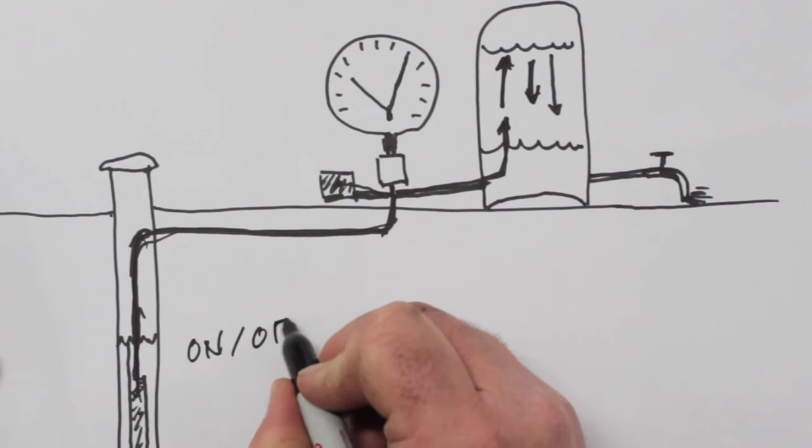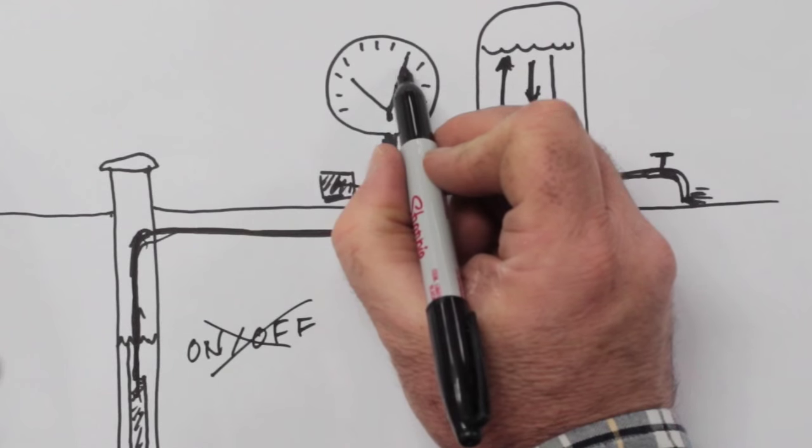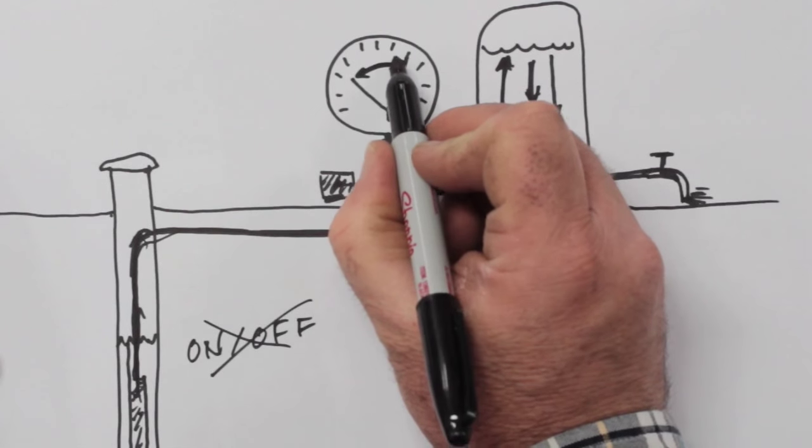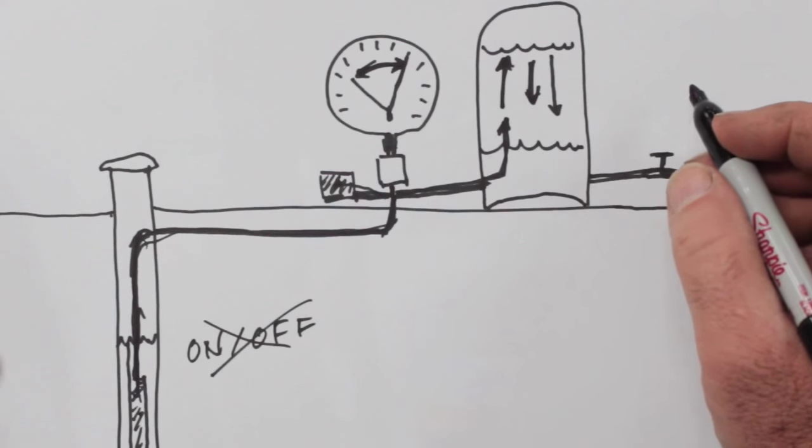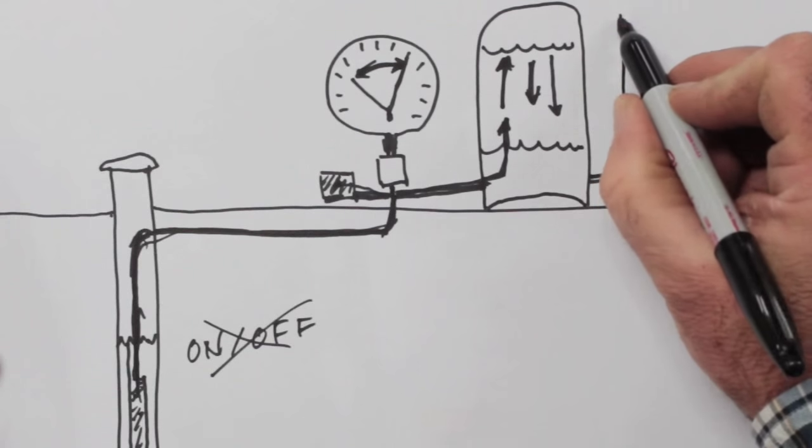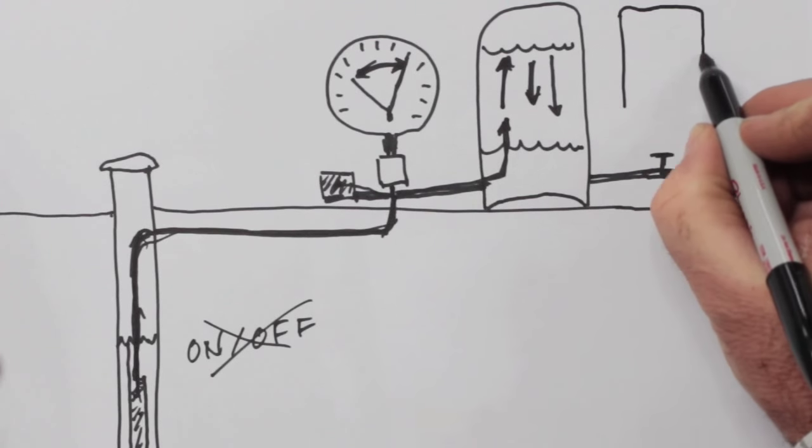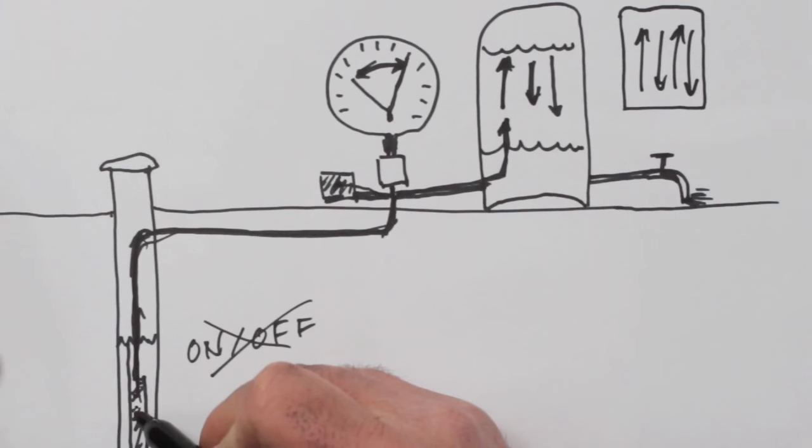All that on and off stuff is bad for pumps. Pumps are much better off if they just run constantly. Then there's the problem of rising and falling water pressure at your taps, which is kind of annoying. The situation gets even worse when you have a smaller tank. A smaller tank has a smaller capacity, so it's going to be filling and emptying much more often and that's going to be hard on your pump.